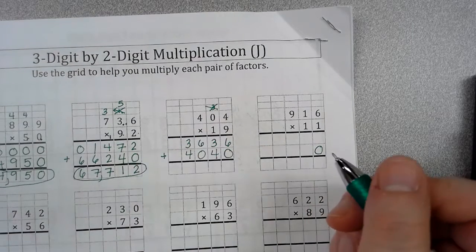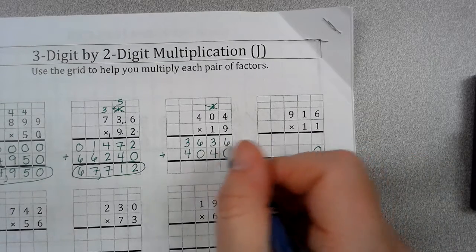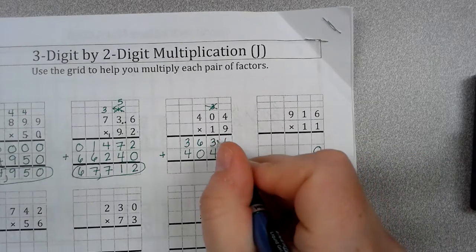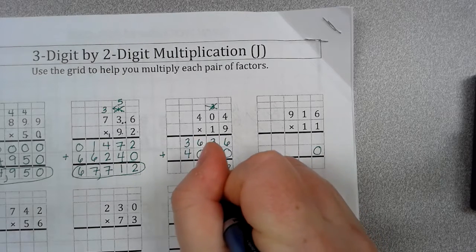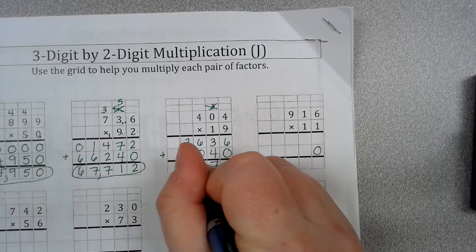So, now all we have to do is add. 6 plus 0 is 6. 3 plus 4 is 7. 6 plus 0 is 6. And, 3 plus 4 is 7.